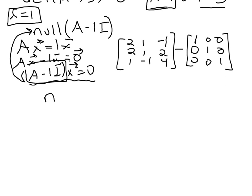So we're actually finding the null space of the matrix. 2 minus 1, leave these two entries alone. 2, and now 1 minus 1. Let me actually highlight these diagonal entries. So 1 minus 1, so I get 0 here. And then let me go ahead and move to the next diagonal entry. So 4 minus 1, so 3 here. Every other entry remains the same. So I had a 2 here, 1 and negative 1 here. So we're finding the null space for that matrix.